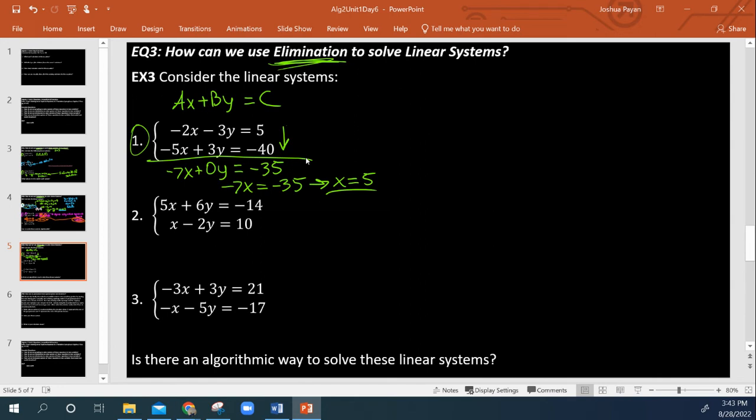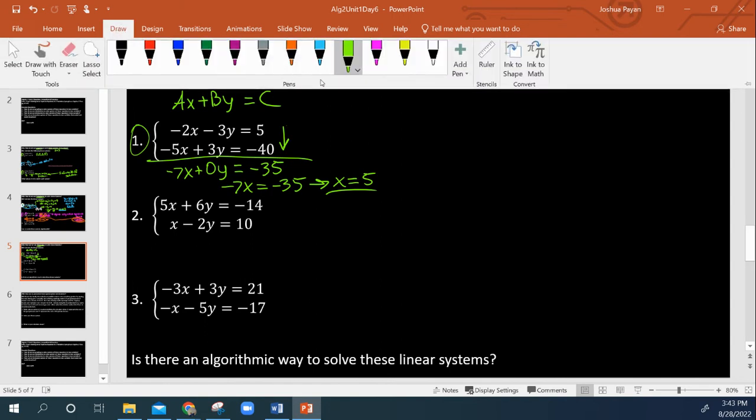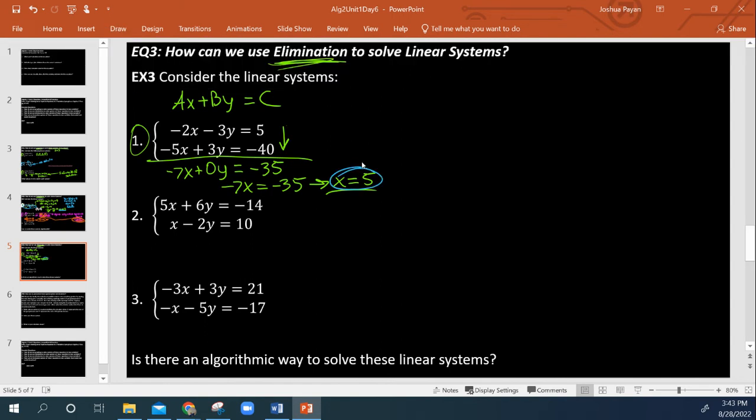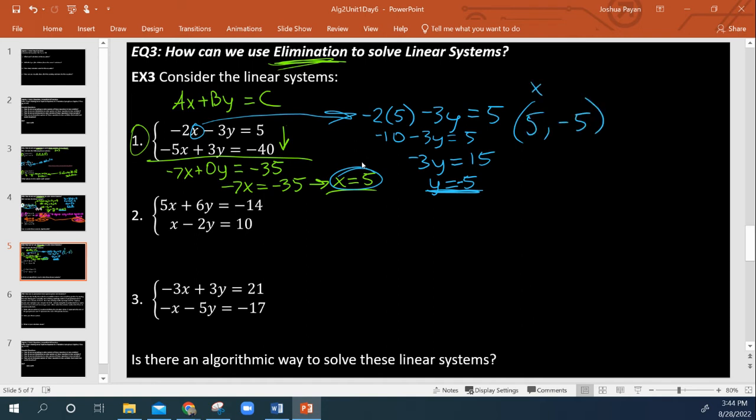Now that we know x, we can just plug into one of these other equations. And that's exactly what I'm going to do. I'm going to take x and plug it in right here just because. So negative 2 times x. Now that I know what it is, I can easily calculate what y is. So negative 2 times 5, negative 10, minus 3y equals 5. Add 10 to both sides. Negative 3y is equal to - brain fart - 15. And divide by negative 3 on both sides. Y is equal to negative 5. And again, we express our answers as ordered pairs. So we're going to say our solution set is 5 by negative 5. Namely, x is positive 5, y is negative 5.